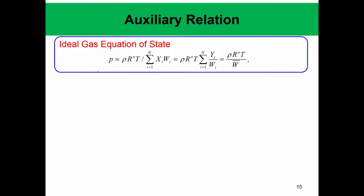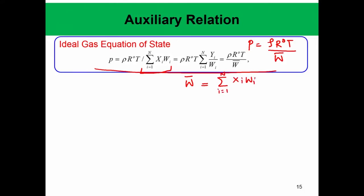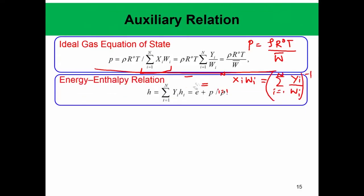An important auxiliary equation is the ideal gas equation of state: P = rho * R0 * T / W-bar, where R0 is the universal gas constant and W-bar is the mean molecular weight. The mean molecular weight is: W-bar = summation over i=1 to n of (x_i * w_i), which also equals the inverse of the summation over i=1 to n of (y_i / w_i). This formula is very handy when calculating pressure from a given data set.